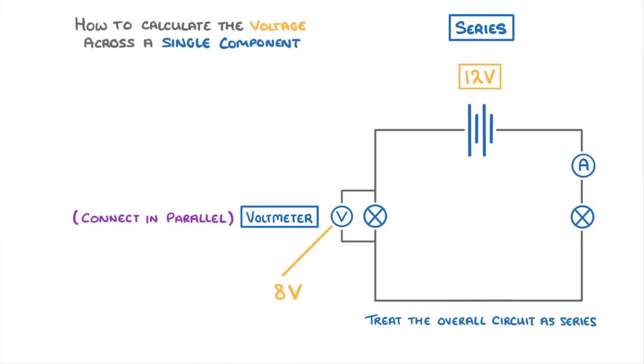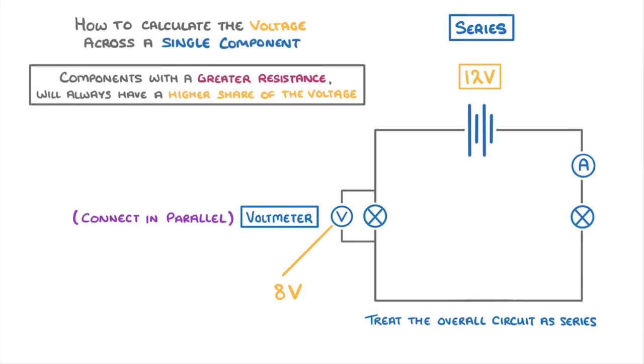As a final point, it's good to remember that due to Ohm's law, those components with a greater resistance will always have a higher share of the voltage. You can think of this in terms of more force being required to push the charge through the areas of highest resistance. This is why our 4 ohm resistor had 8 volts of the overall potential difference, but our 2 ohm resistor only got 4 volts.